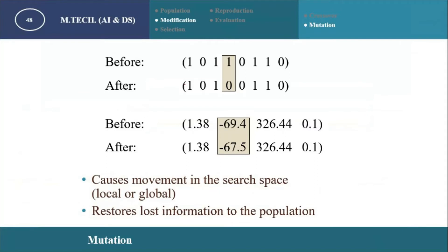For example, here is a chromosome: 1 0 1 1 0 1 1 0. Out of this, we change only one bit — one particular position, one gene. The '1' at a specific position is changed to '0', giving the new chromosome: 1 0 1 0 0 1 1 0. This type of small change is called a mutation operator.